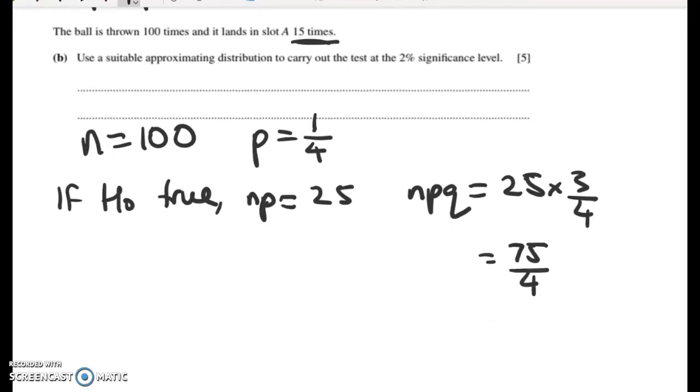And so my estimate for the standard deviation will be the square root of that. So I went and worked that out straight off at the start, and I got 4.330127. And we're going to do a two-tailed test using this normal approximation.